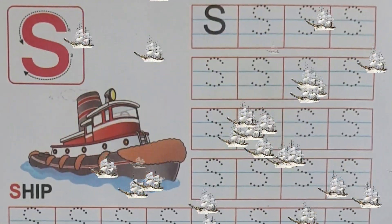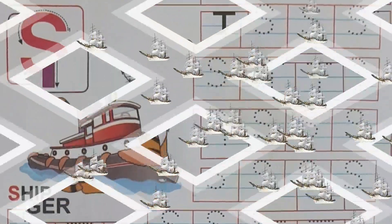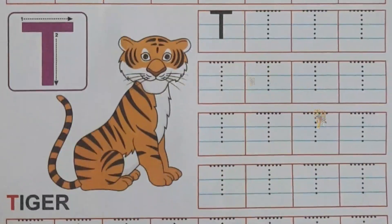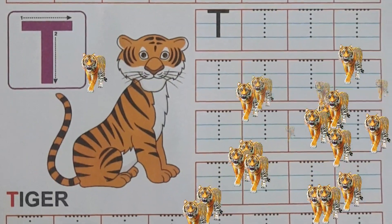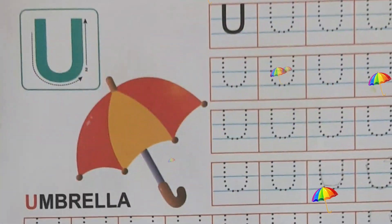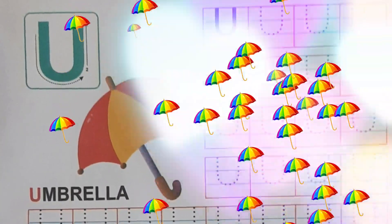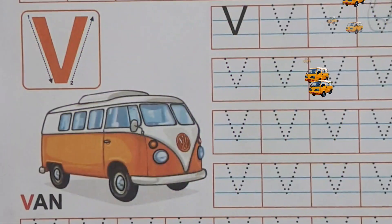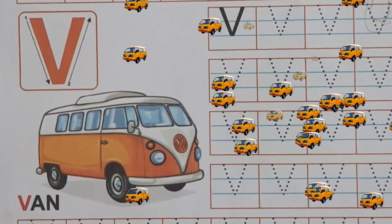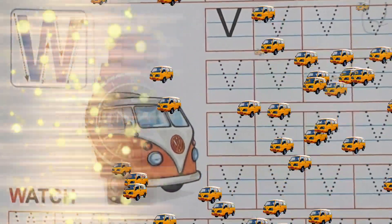S for Shape, T for Tiger, U for Umbrella, V for Band.